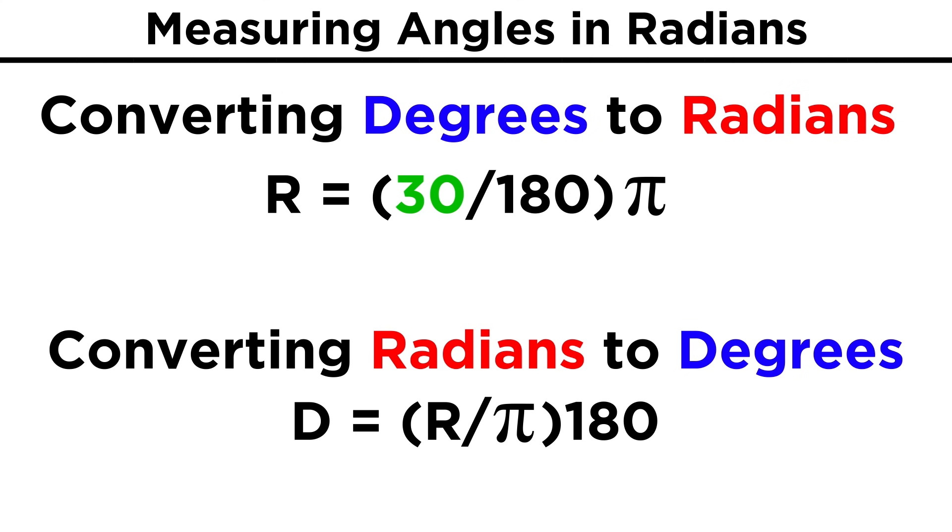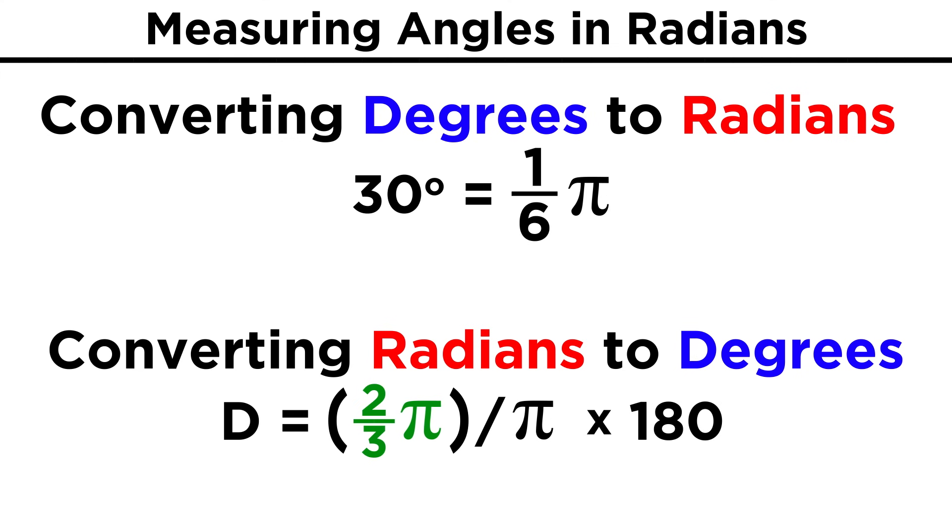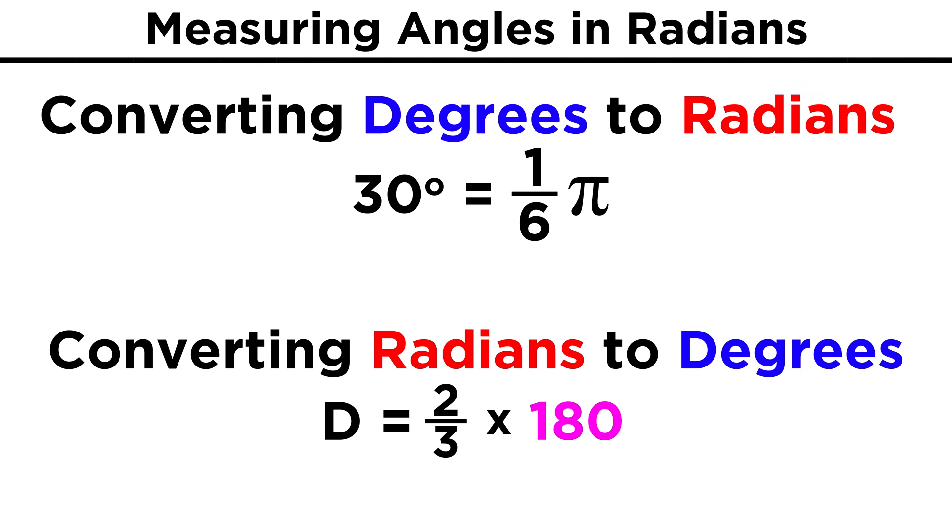Try converting 30 degrees to radians. 30 over 180 simplifies to one over six, and then times π, so one-sixth π. How about two-thirds π? Take away the π, and multiply by 180, and that will be 120 degrees.